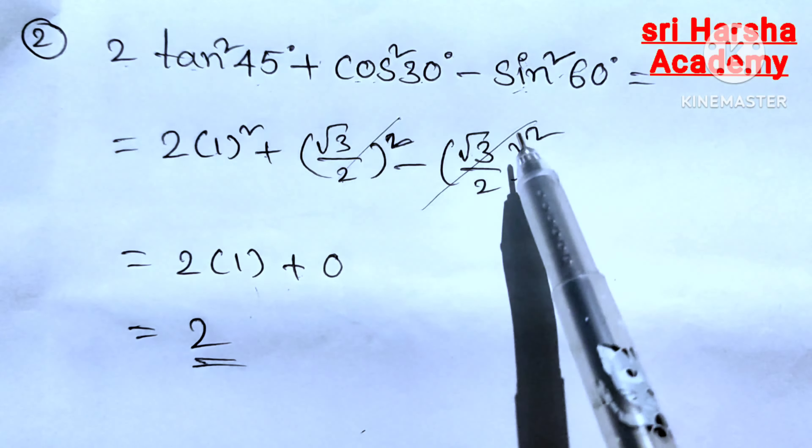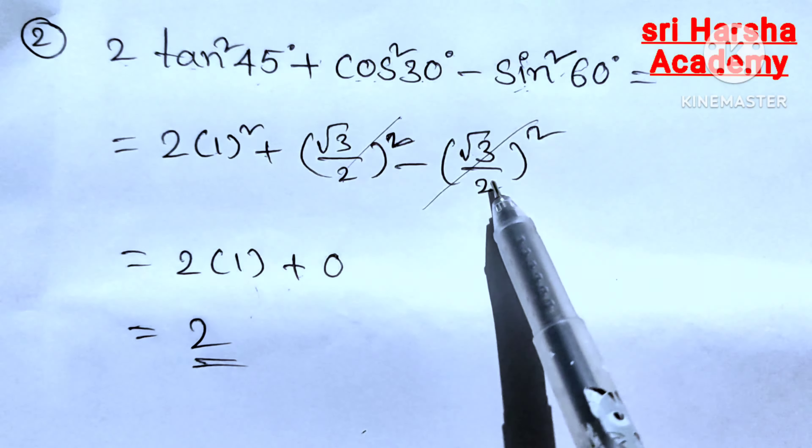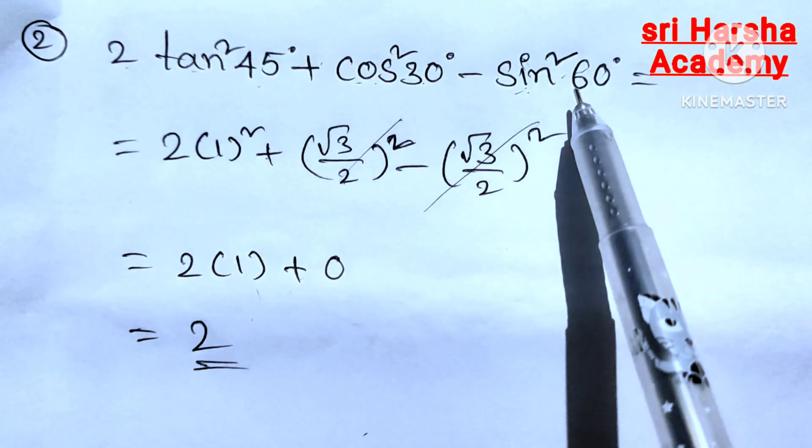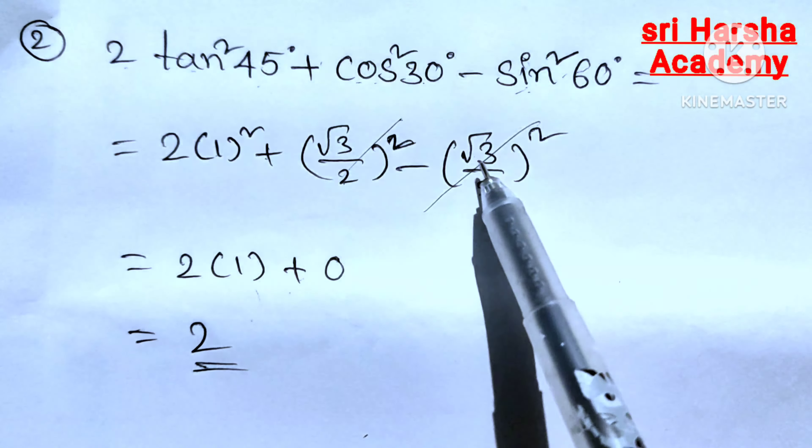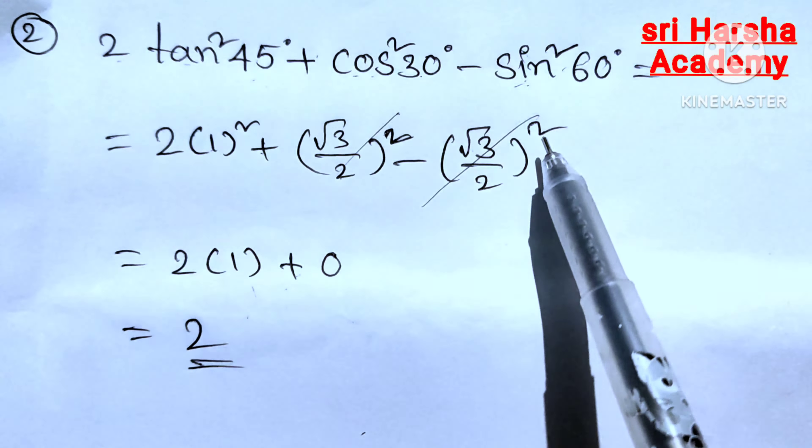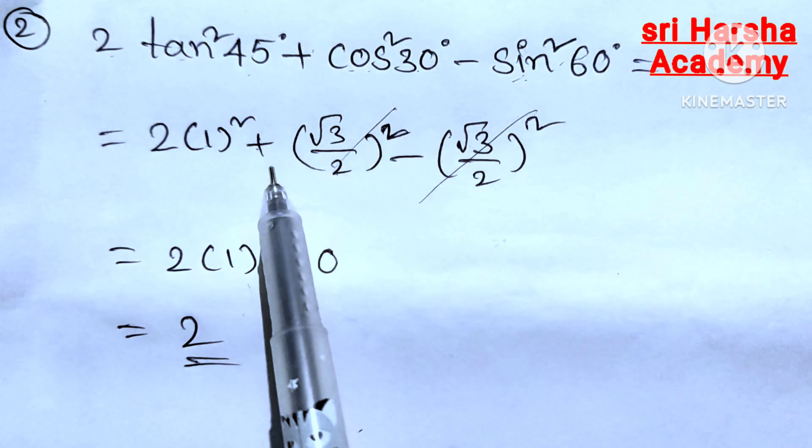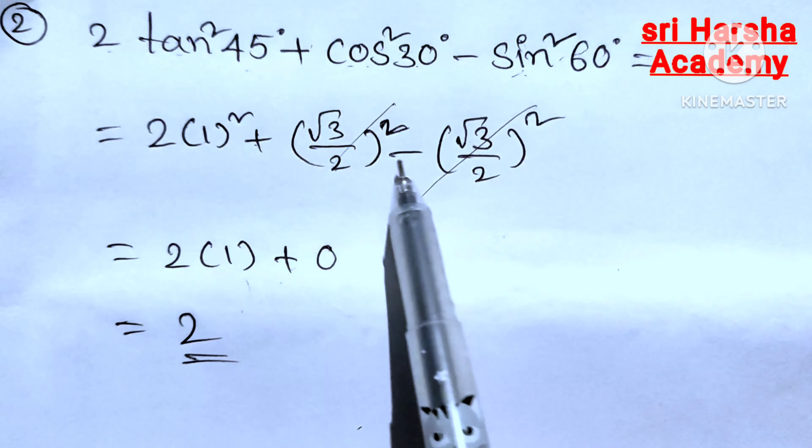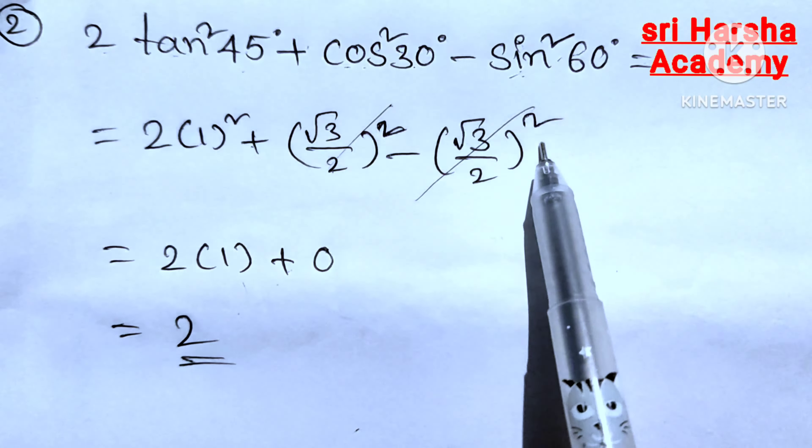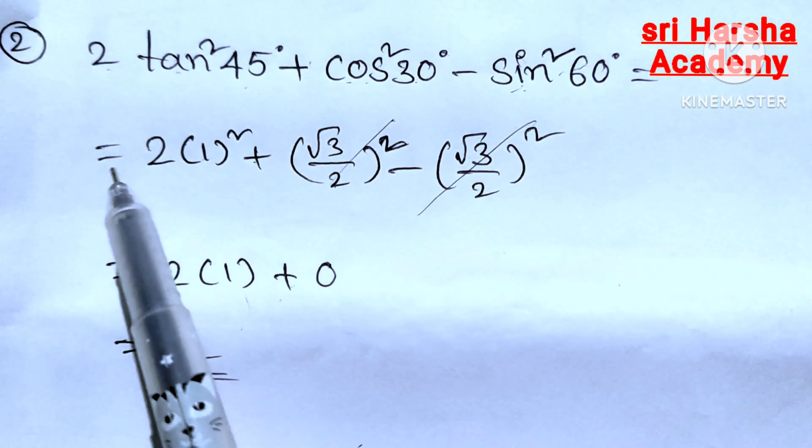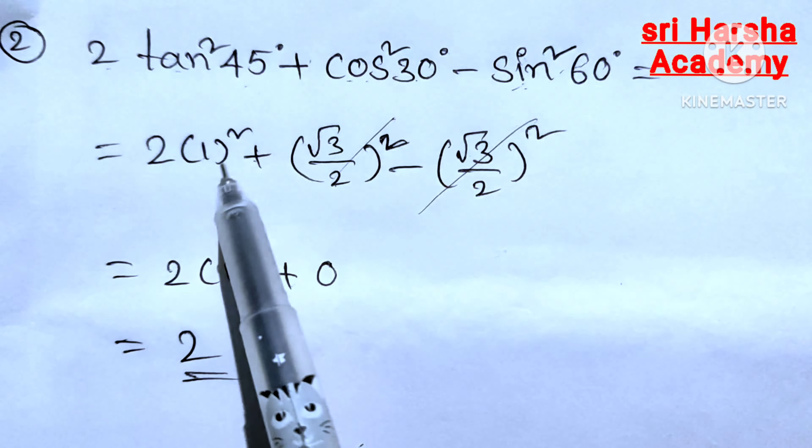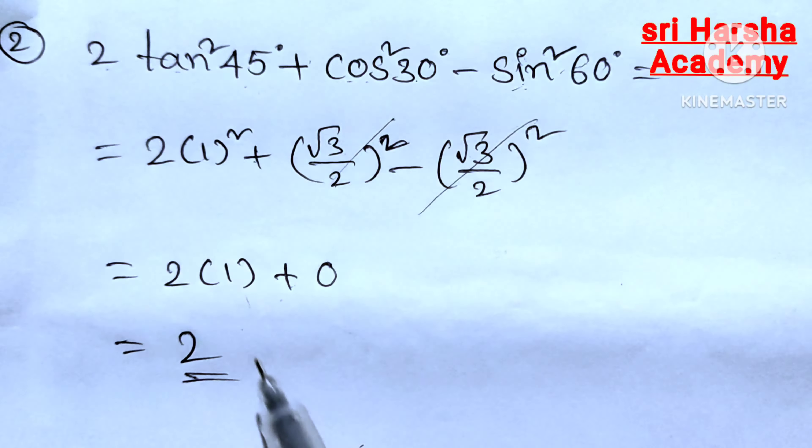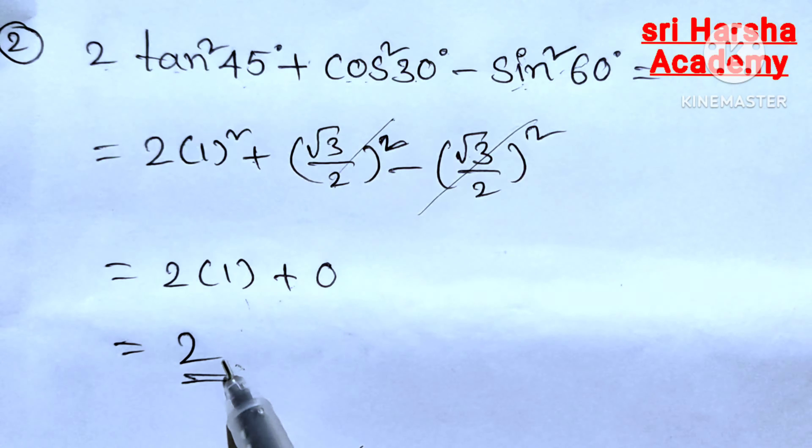Minus sin square 60 degrees. Sin 60 degrees is root 3 by 2, but here sin square 60, so root 3 by 2 whole square. Here plus root 3 by 2 whole square minus root 3 by 2 whole square get cancelled. So here 2, 1 square value is 1, so 2 into 1, 2 is our answer.